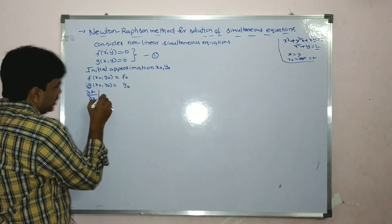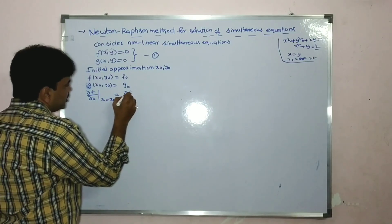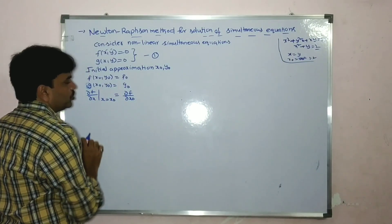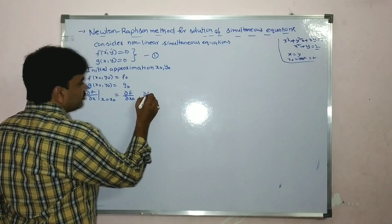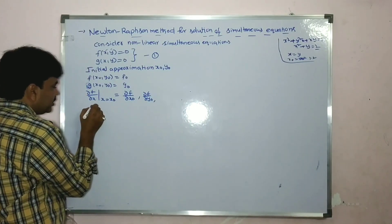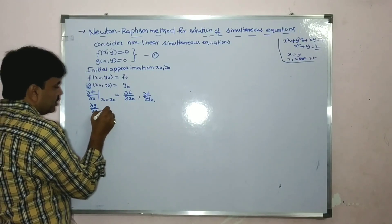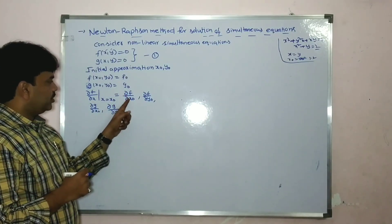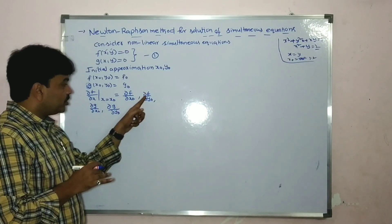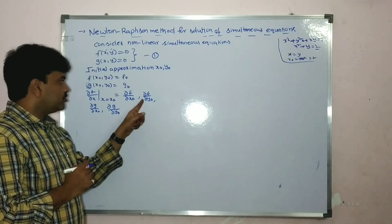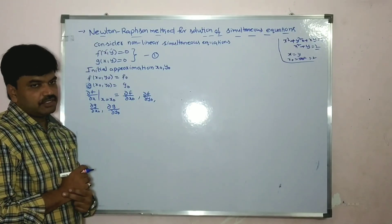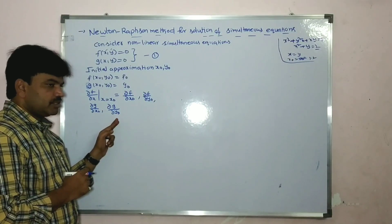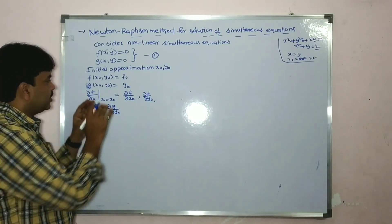Now there is notation: ∂f/∂x at x equal to x0 is denoted by ∂f/∂x₀. Similarly, you find ∂f/∂x₀ and ∂f/∂y₀. ∂f/∂y₀ means ∂f/∂y at y equal to y0. ∂g/∂x₀ means ∂g/∂x at x equal to x0. ∂g/∂y₀ means ∂g/∂y at y equal to y0. You find all these values.